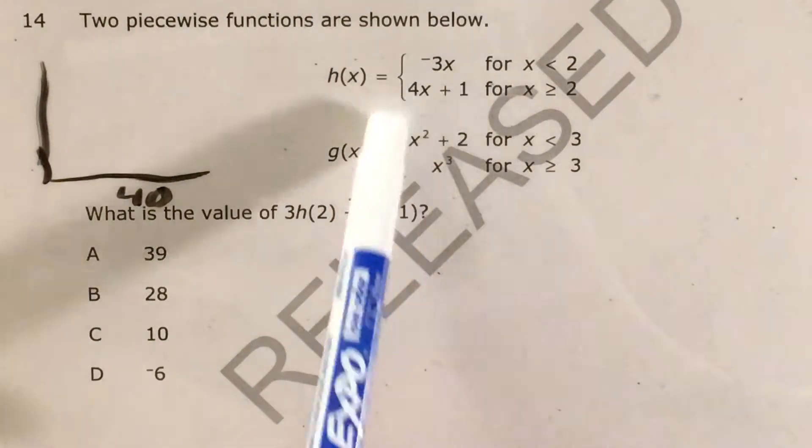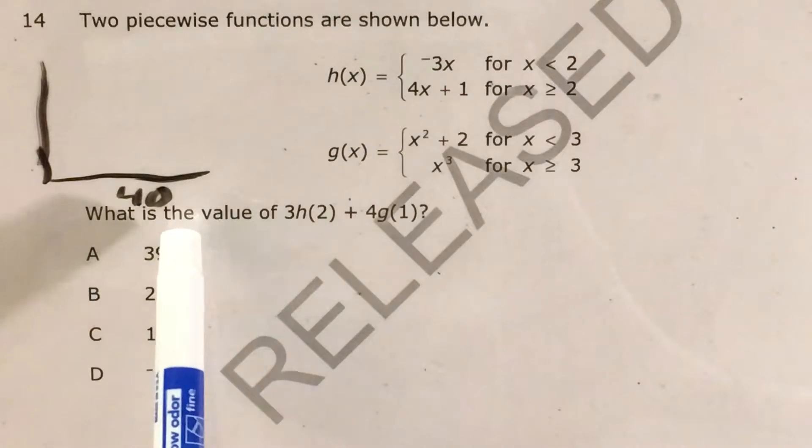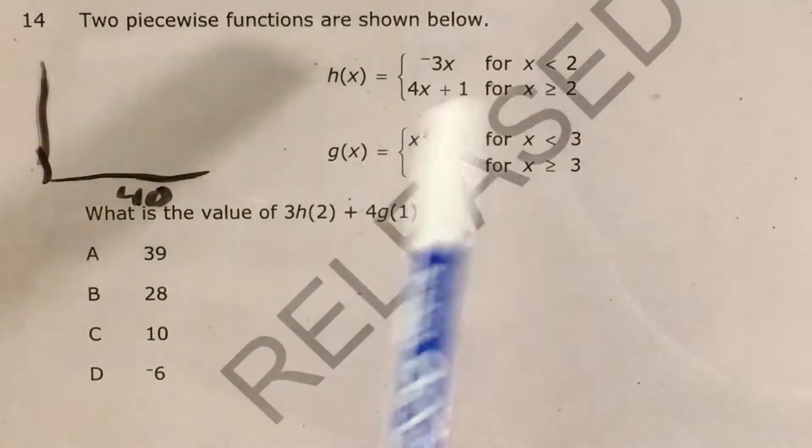The question gives us two piecewise functions and asks us to find the value of 3 times H of 2 plus 4 times G of 1.